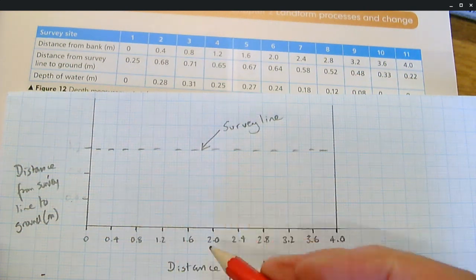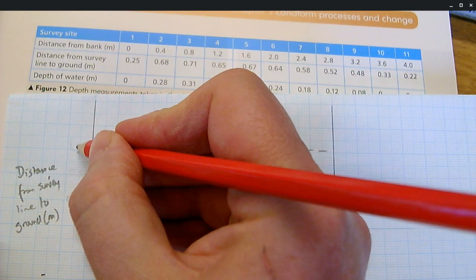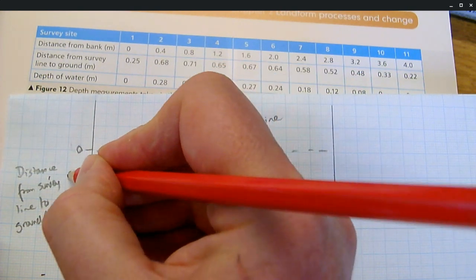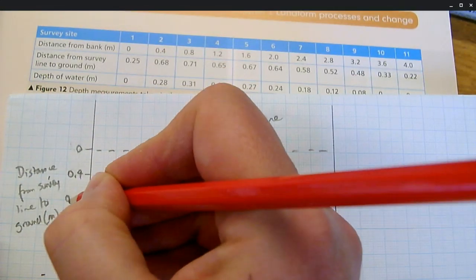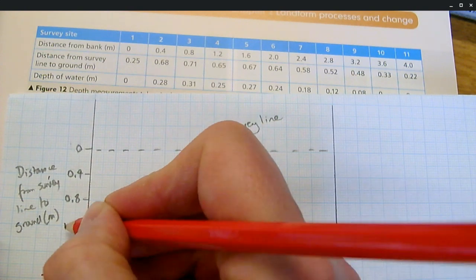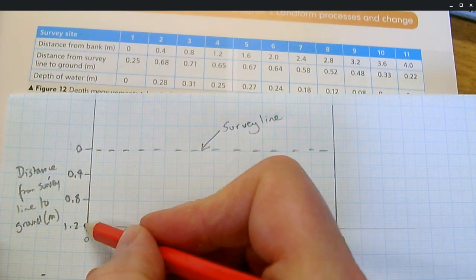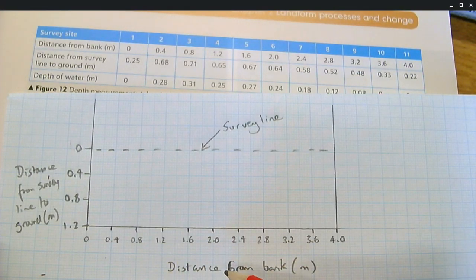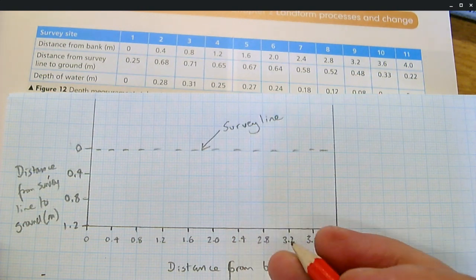We need the same scale coming down from the survey line. So this would be 0, this would be 0.4, this would be 0.8, and this would be 1.2. And that means we've got the same scale on both sides. We avoid vertical exaggeration.